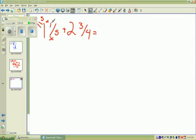Then you add it to 1, your numerator, and you get 6. So your answer will be 6 5ths because you leave your denominator on the bottom.